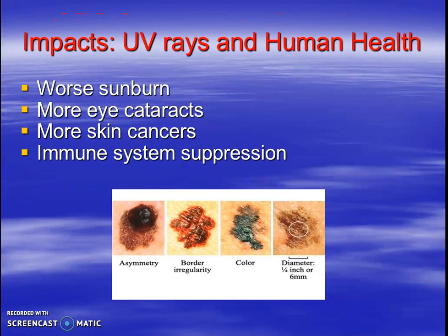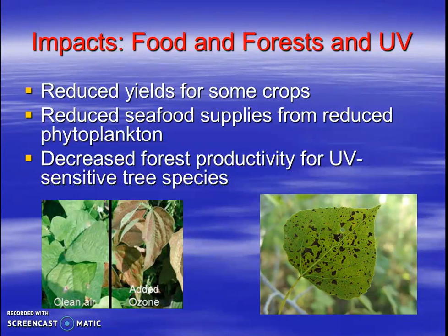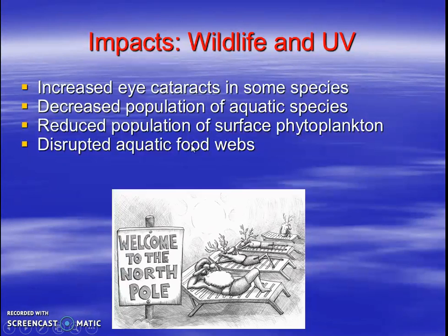Then we have UV rays coming down where we are. More UV rays impact human health: worse sunburns, more eye cataracts, more skin cancer, immune system suppression. It can affect our food and forests — we'll have less crop yield, less seafood supply because phytoplankton at the bottom of the food chain are affected. Trees get sunspots, meaning they're not healthy and won't grow as much, leading to less photosynthesis. Wildlife get cataracts too, aquatic populations decrease, and food chains and food webs are disrupted. We don't want that extra UV — we want the ozone layer to protect us like a big umbrella.